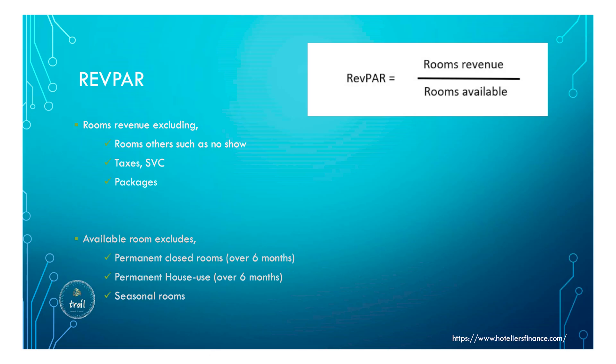The final metric is RevPAR — the product of occupancy and average rate. Performance is measured using RGI, the Revenue Generating Index. The RevPAR formula is simple: total room revenue divided by rooms available — not rooms occupied. Room revenue excludes no-shows, taxes, service charges, and packages. Available rooms exclude permanently closed rooms over six months, permanent house use over six months, and seasonal rooms.